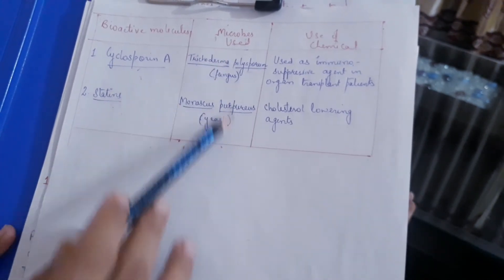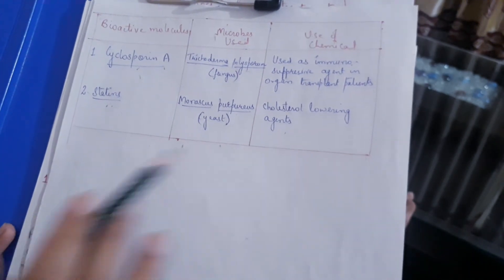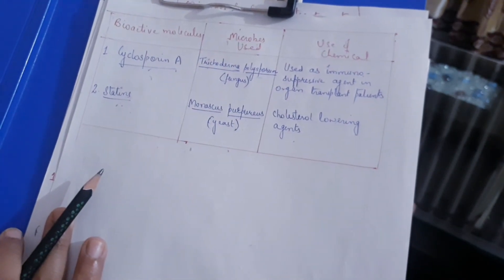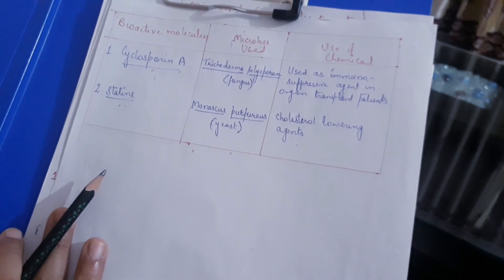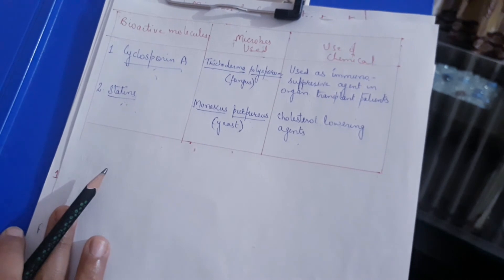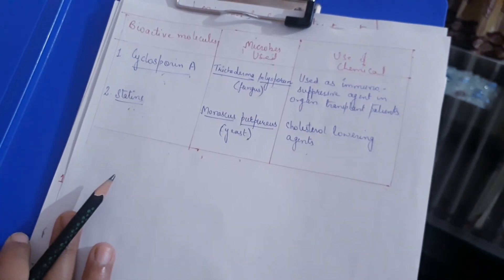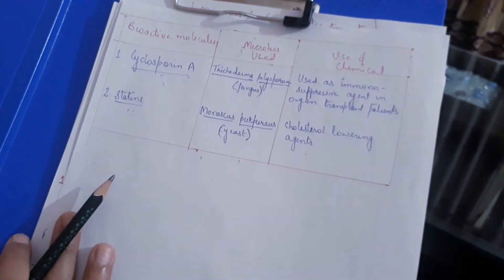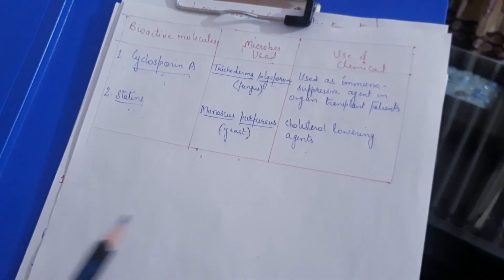Cyclosporin A functions as an immuno-suppressive agent — it suppresses immunity. It is used during organ transplantation, because when a foreign organ is transplanted into the body, the body tends to reject it. Cyclosporin A suppresses that rejection response so the transplanted organ is accepted. Statins act as cholesterol-lowering agents — they lower cholesterol and prevent fatty substance deposits in the body.